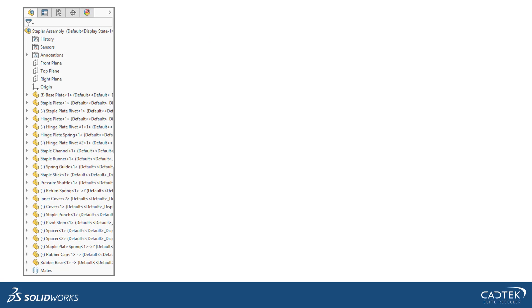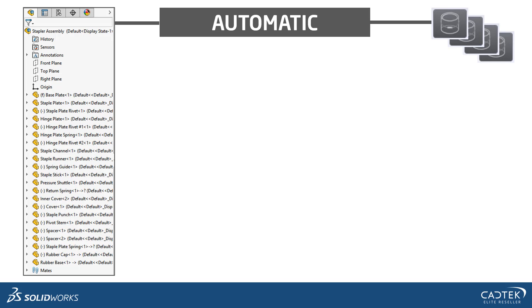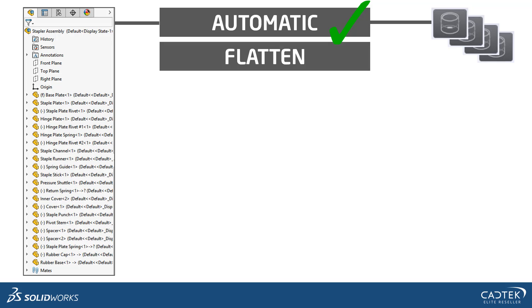The first option is the Automatic setting. This looks at the Feature Manager tree, breaks it into the divisions of the parts already in there, but also splits it into the appearances you've got associated with it. We would suggest applying your materials in SOLIDWORKS, and the Automatic setting is the best combination for bringing in your parts and all of your appearances that are already set. That's why we recommend it — big green tick for that one.